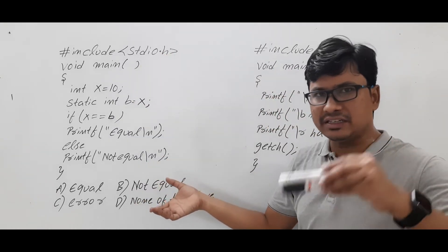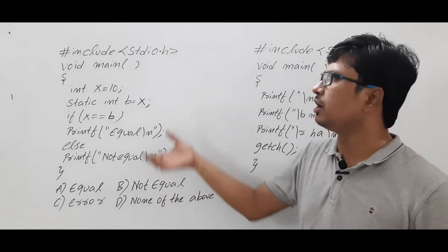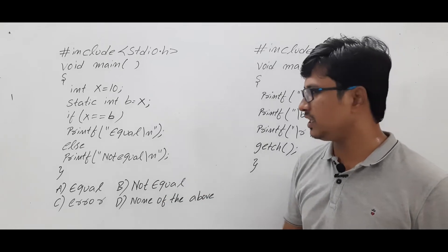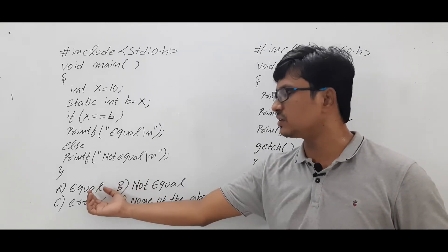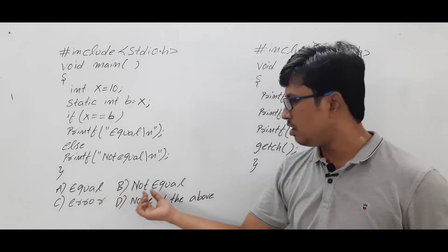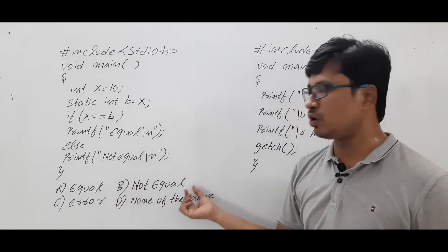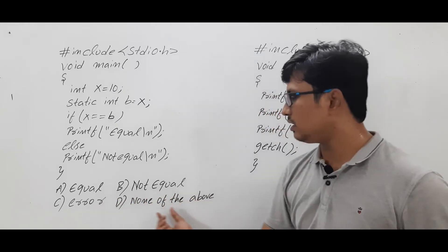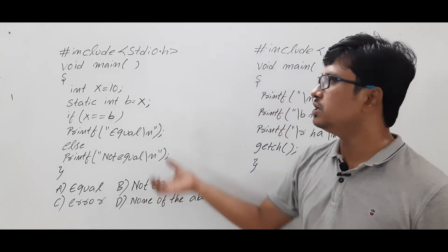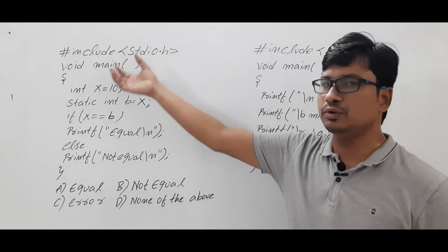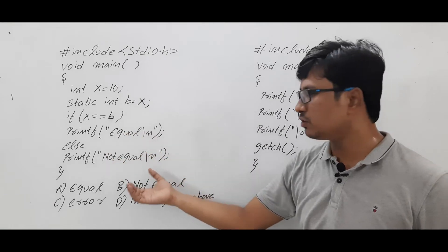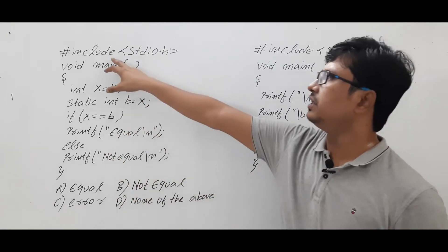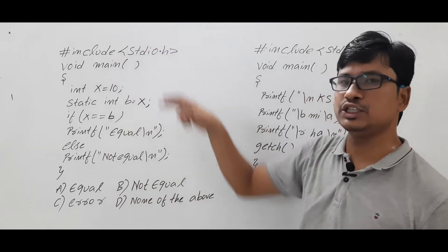Look at question number one. They have given a program — if you execute this program, they are asking what will be the output. They have given four options: option A is 'equal', option B is 'not equal', option C is 'error', and option D is 'none of the above'. We need to find what will be the output of this program.